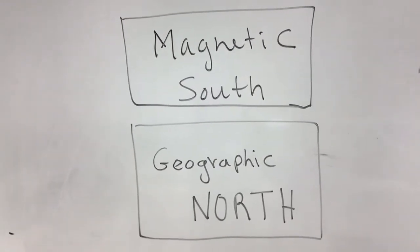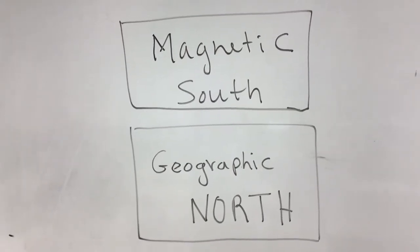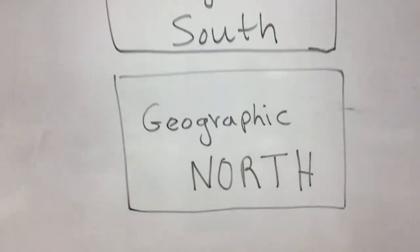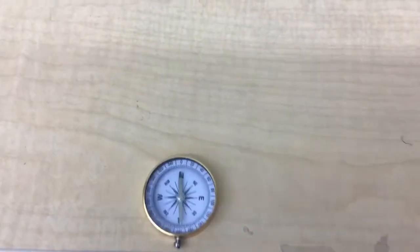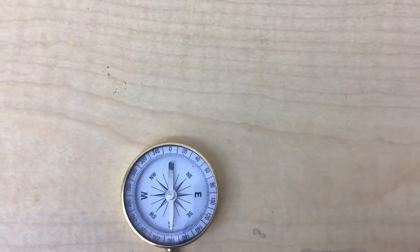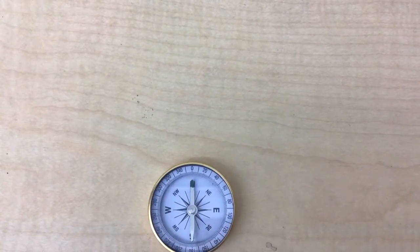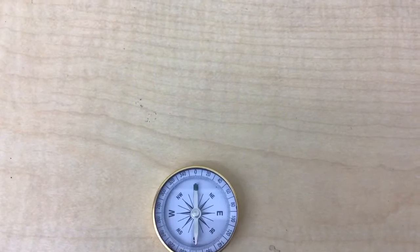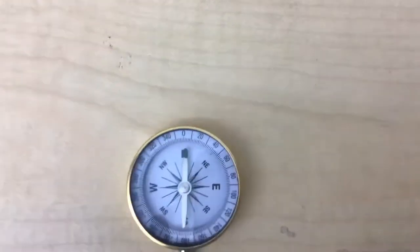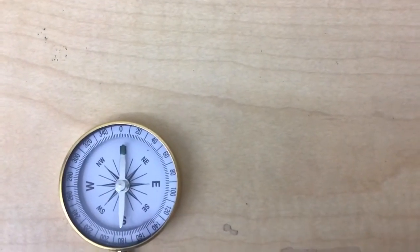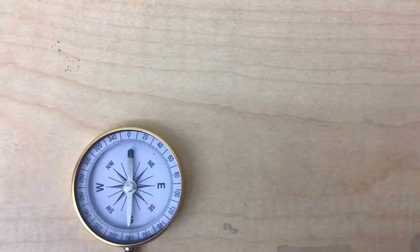Here I have a compass, and you can see the north pole of this compass is the colored one — the green tip — and the silver one is the south pole of the compass. The one that's green is the north pole of the compass because that is attracted to the magnetic south pole of Earth.